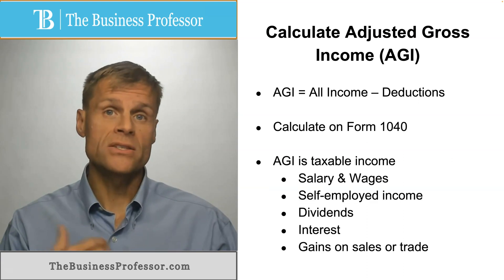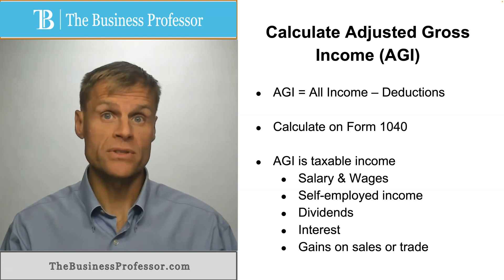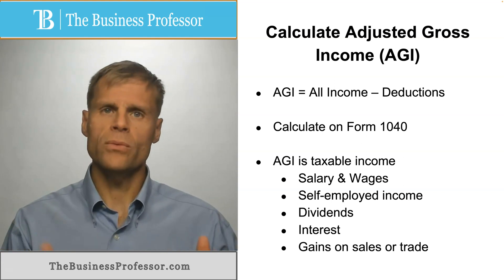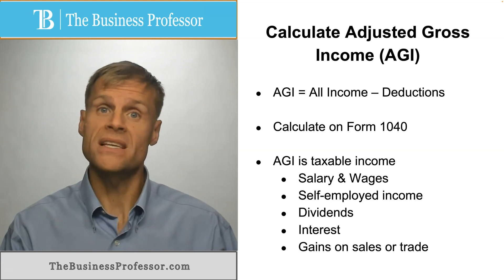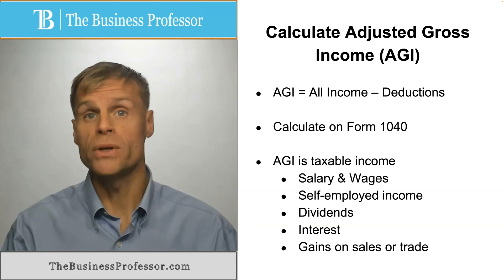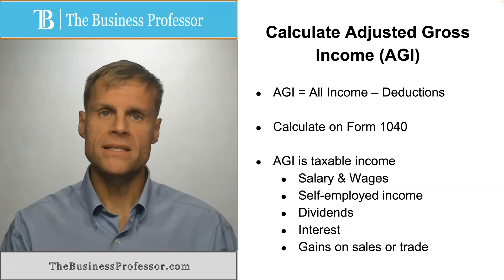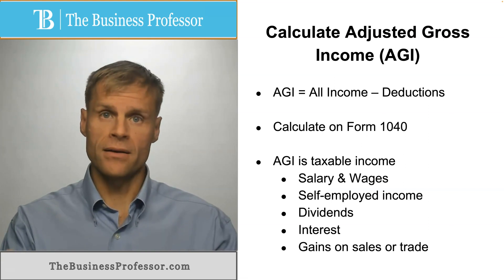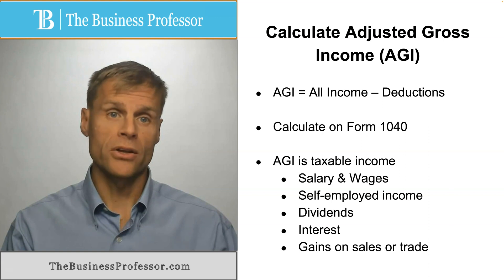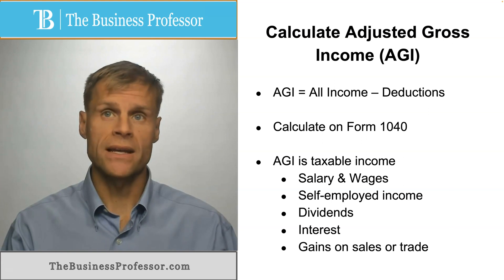What are the sources of income generally that are included in adjusted gross income? Well, first, salary and wages — that's the money you receive from your employer for doing your job. Self-employment income: if you have your own business and you work for yourself, the funds that you receive as a flow-through your business entity, or if you're a sole proprietor and you receive it directly, all of this is part of your adjusted gross income.